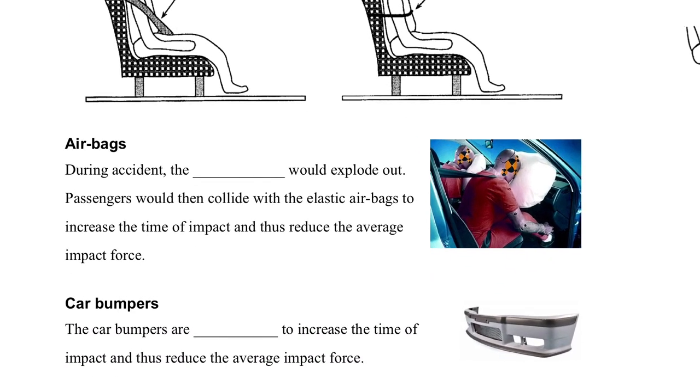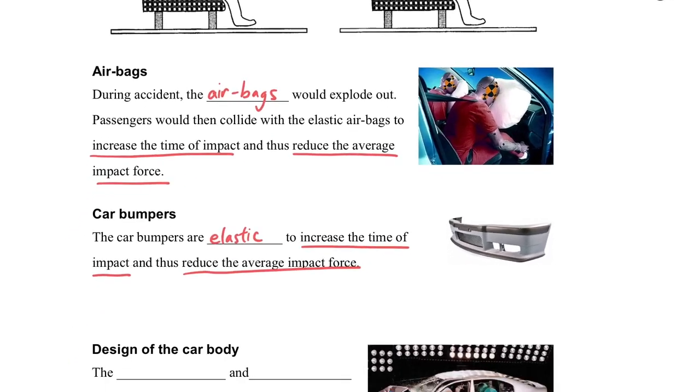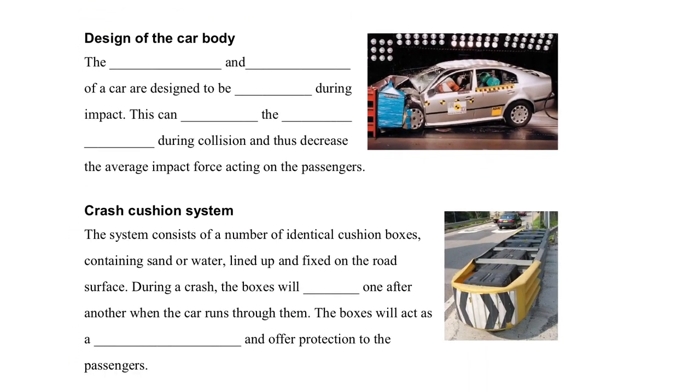Another thing that's used is the airbag. During the accident, the airbag will explode out. In that case, it can increase the time of impact and reduce the average impact force. And also the car bumper will use elastic material. And the idea is the same: increase the impact time and reduce the average impact force.